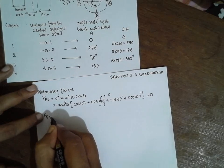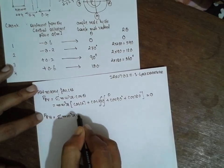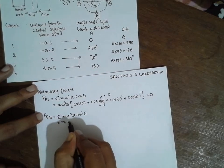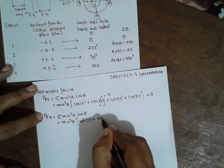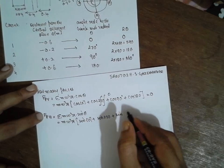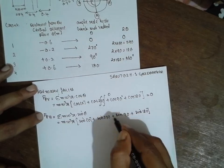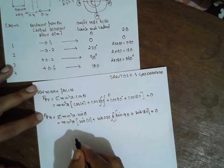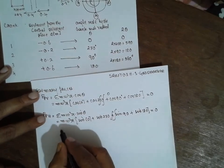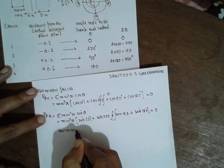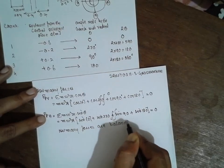For the primary force horizontal, the formula is M·ω²·R·sin(θ). Taking M·ω²·R outside: sin(0°) + sin(270°) + sin(90°) + sin(180°). If you calculate it, the result is 0. Therefore, the primary forces are balanced.